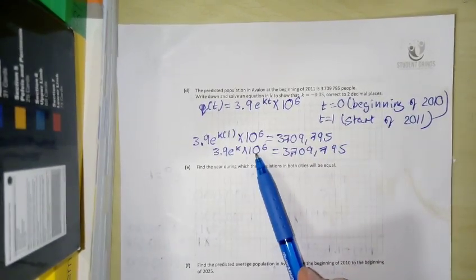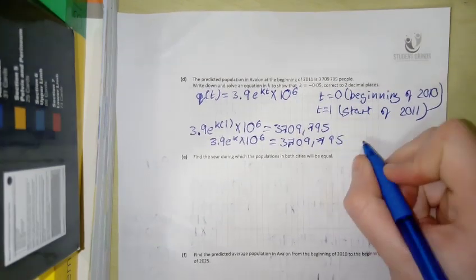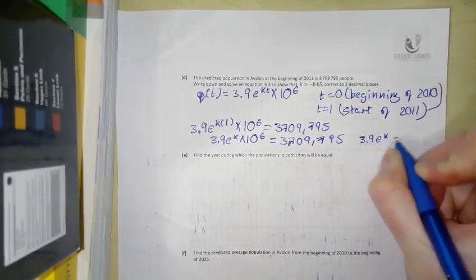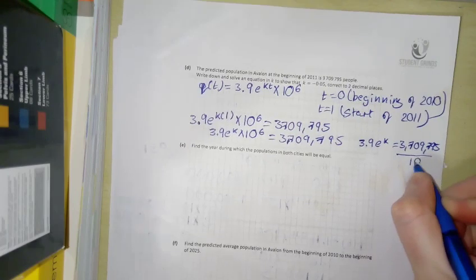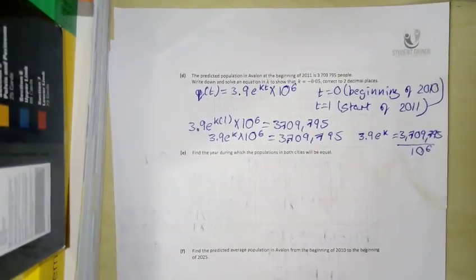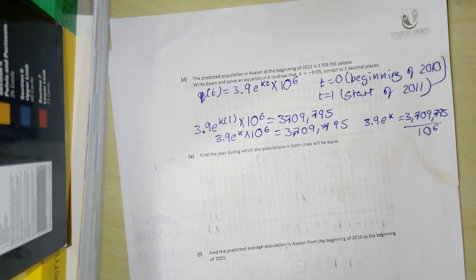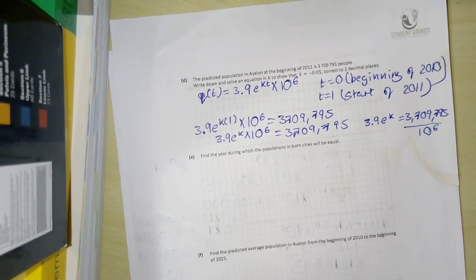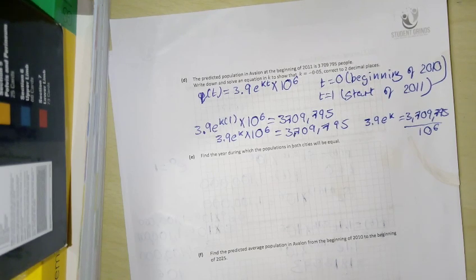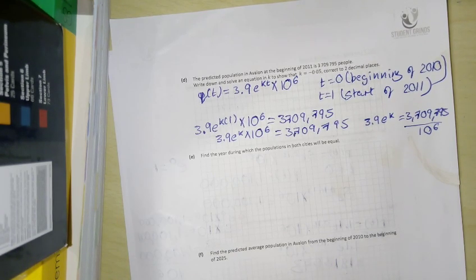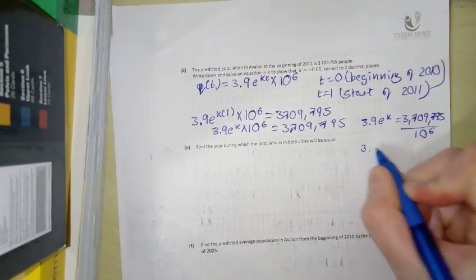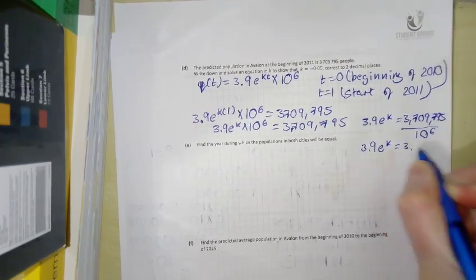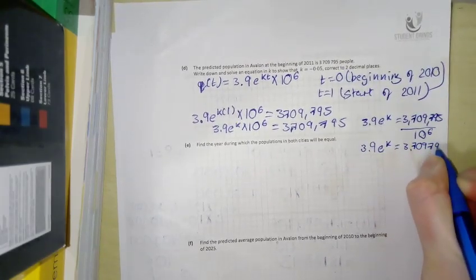So I'm multiplying by 10 to the power of 6 on this side, so I'm going to divide on the other side. So 3.9e^K is equal to 3.709795 divided by 10 to the power of 6. So I get 3.9e^K is equal to 3.709795.